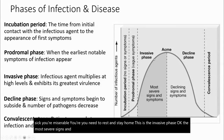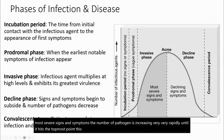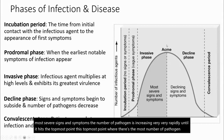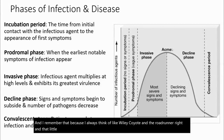The number of pathogens is increasing very rapidly until it hits the topmost point. This topmost point where there's the most number of pathogens is called acme. I remember that because I always think of Wile E. Coyote and the Roadrunner, and that ACME thing would hit the coyote.